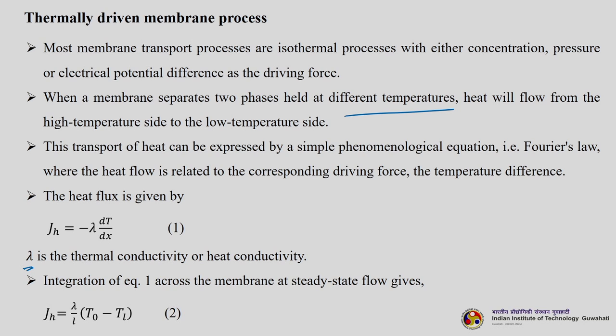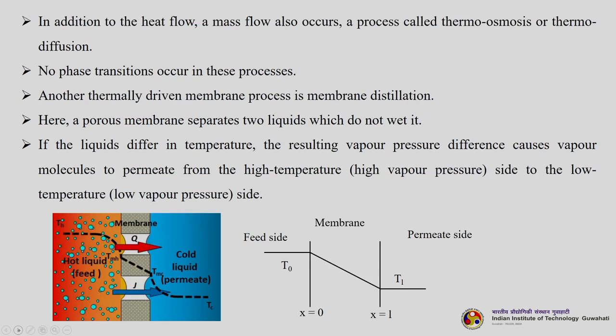If you integrate Fourier's law, we get flux equals lambda divided by L times (T_naught minus T_L), where L is the thickness of the membrane. In addition to heat flow, a mass flow also occurs in a process called thermosmosis or thermodiffusion, with no phase transitions occurring. Another important application of this membrane separation process is membrane distillation.